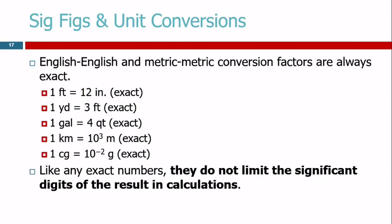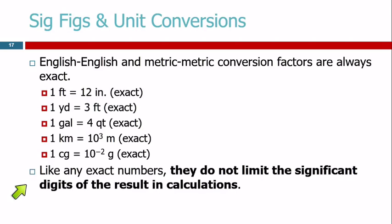Sig figs in unit conversions: English-English conversions are always exact. Metric-metric conversions are always exact. One foot equals 12 inches — that's an exact conversion. When we use that as a conversion factor, we don't even consider sig figs — it's exact. A yard is three feet, exact. A kilometer is 10 to the third meters — metric-metric, exact. Like any exact numbers, they don't limit the number of significant figures in the result.